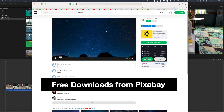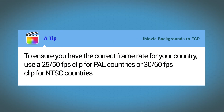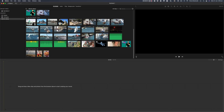The link's in the description below. A tip to ensure you've got the correct frame rate for your country: use 25 or 50 frames per second for PAL countries, or a 30 or 60 frames per second clip for NTSC countries.